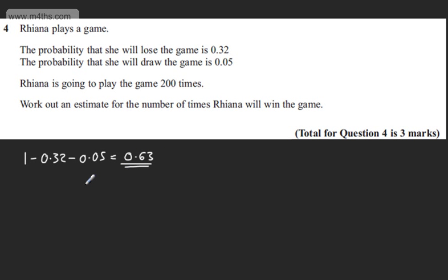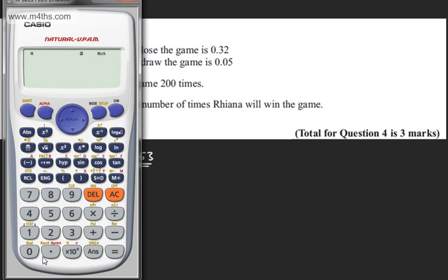So all I'm doing is finding the probability. I'm now going to multiply the probability 0.63 by the number of trials. And that will give me how many games I expect her to win. Remember, this is simply relative frequency or experimental probability.